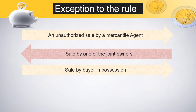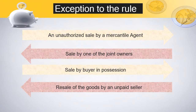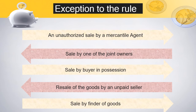Exception 3: Sale by buyer in possession. It happens many times that the buyer has possession of the goods and many days have passed and the true owner has not been identified; in that case, that person can again sell it. Exception 4: Sale by an unpaid seller. If any person has not paid the price of goods and the seller has waited for many days and the buyer still has not paid the amount, the seller can resell the goods. Exception 5: Sale by finder of goods. If any person finds goods somewhere and even after inquiry has not found the true owner, he can sell the goods.